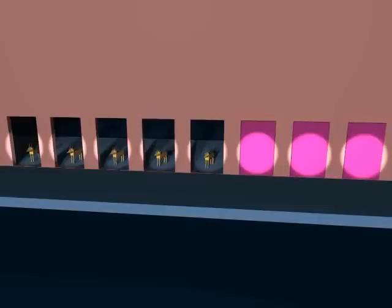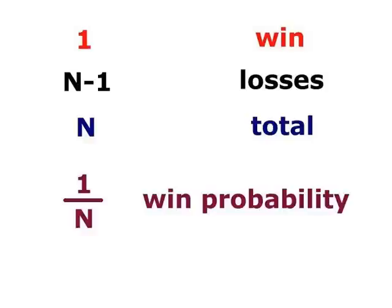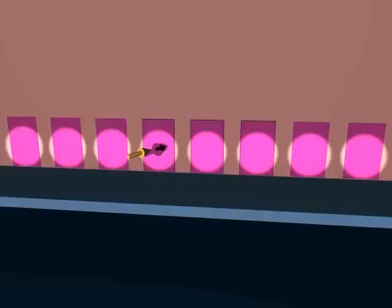The player chooses one door. If we keep, it has one winning door and n-1 losing doors. One winning of n total makes a probability of 1 divided by n—that is, one-third with three doors. Let's go ahead. The host opens one of the remaining n-1 doors.